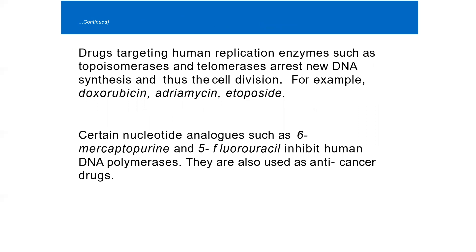Drugs targeting human replication enzymes such as topoisomerases and telomerases arrest new DNA synthesis and thus cell division, and they are used effectively in the treatment of cancer — for example, doxorubicin, adriamycin, and etoposide. Certain nucleotide analogues such as 6-mercaptopurine and 5-fluorouracil inhibit human DNA polymerases and are also used as anti-cancer drugs. This covers eukaryotic replication and the respective inhibitors of replication.